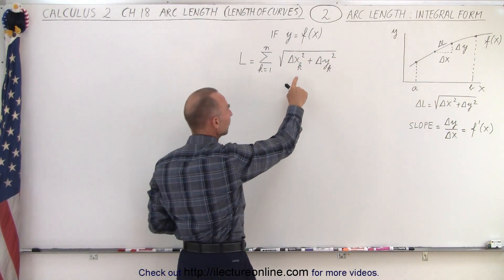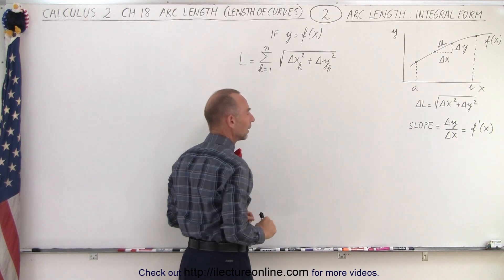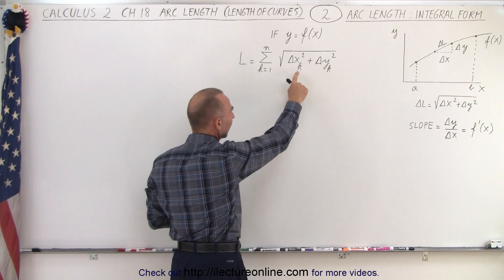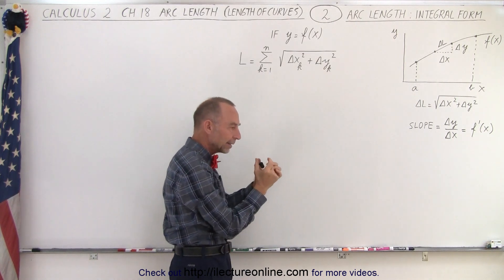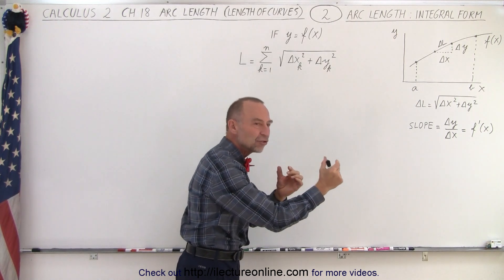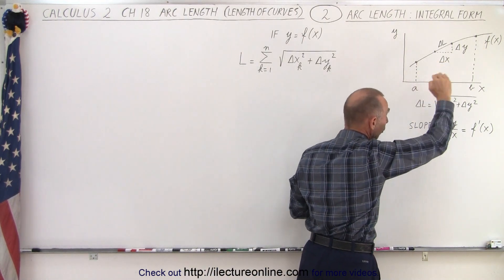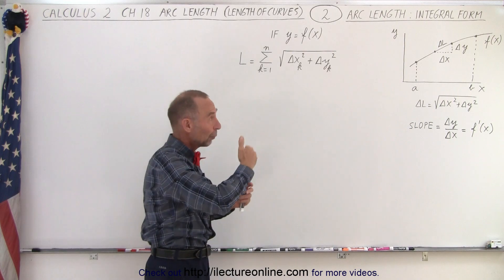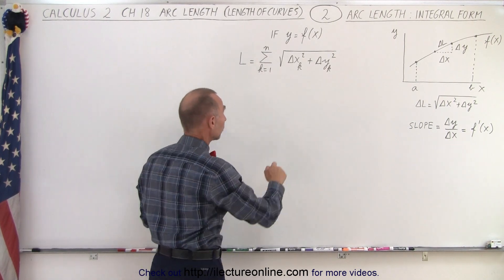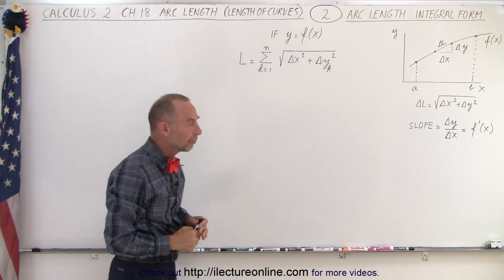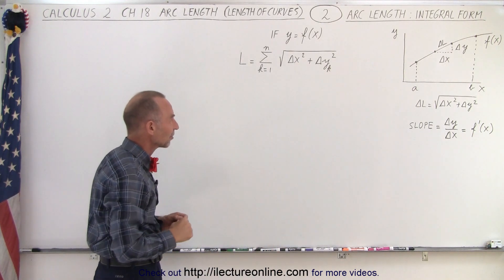Now notice we have a sub-k for both delta x and delta y. But we don't need a sub-k for delta x because we're going to let delta x be the same length each time. It's independent of which section we take. Now delta y, because of the curve, will change from one section of the curve to the other section of the curve so we can actually get rid of that sub-k for delta x. It's going to be the same each time.